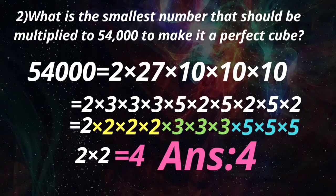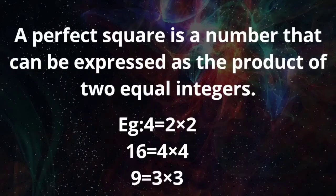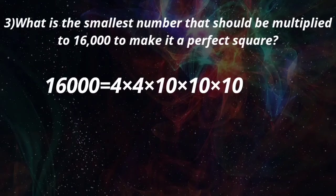Now we can solve a question of perfect square instead of perfect cube. The question is: what is the smallest number that should be multiplied to 16,000 to make it a perfect square? A perfect square is a number that can be expressed as the product of 2 equal integers. For example, 4 is a perfect square written as 2 x 2, and 16 is a perfect square written as 4 x 4. The number given is 16,000.